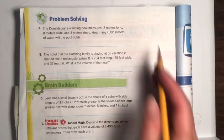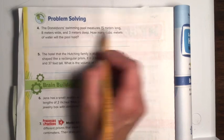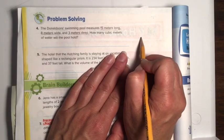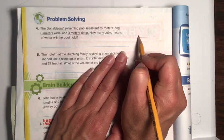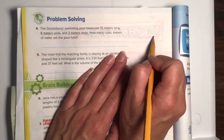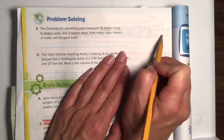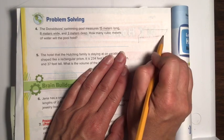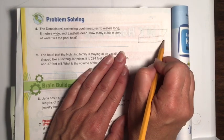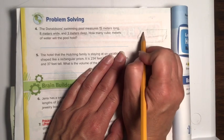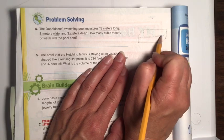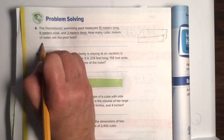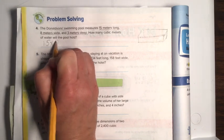The Donaldson Swimming Pool measures 15 meters long, 8 meters wide, and 3 meters deep. Okay, so we have 15 meters long, and then we have about 8 meters wide. And then 3 meters deep. And if you do little dots back here, you can see the bottom of the pool. Okay, close enough, right? How many cubic meters will the pool hold? So, we're going to do 15 times 8 times 3.